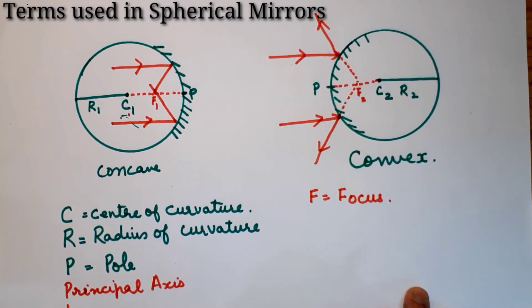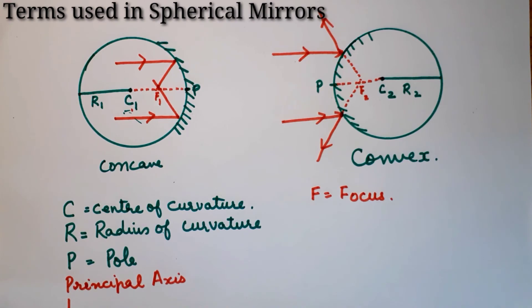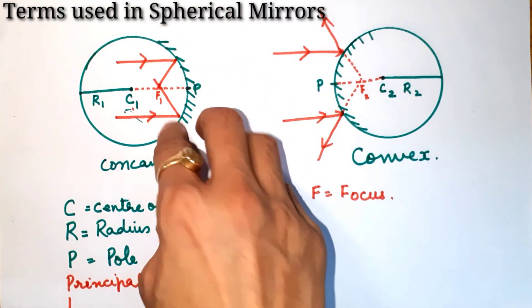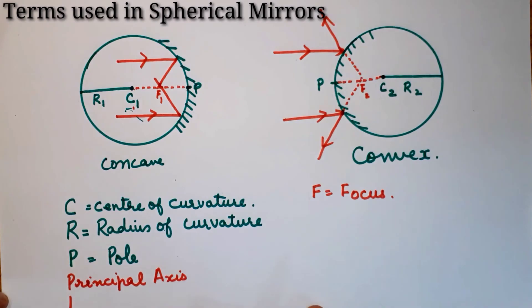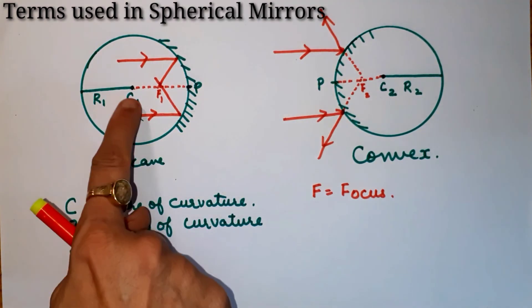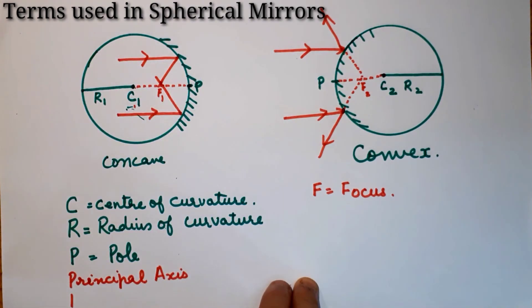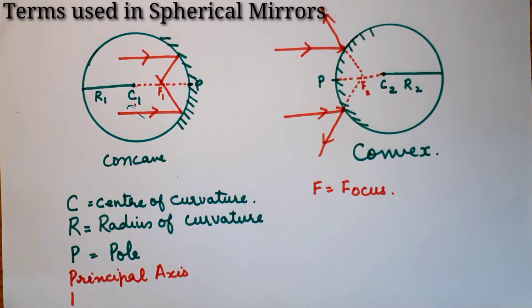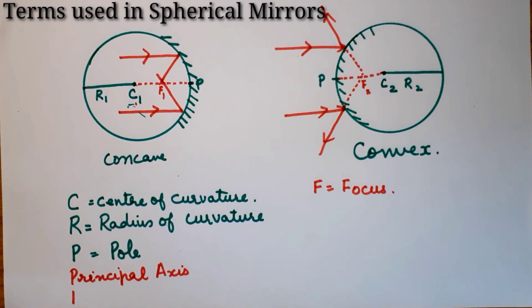So these are the important terms we have discussed: C1 and C2 — the center of the whole sphere — is the center of curvature; the center point of the mirror part is the pole; the radius of the sphere is the radius of curvature; the line joining the center of curvature to the pole is the principal axis; and the point where rays meet together is the focus. Hope you liked it — if you did, please subscribe to my channel. Thank you, children.